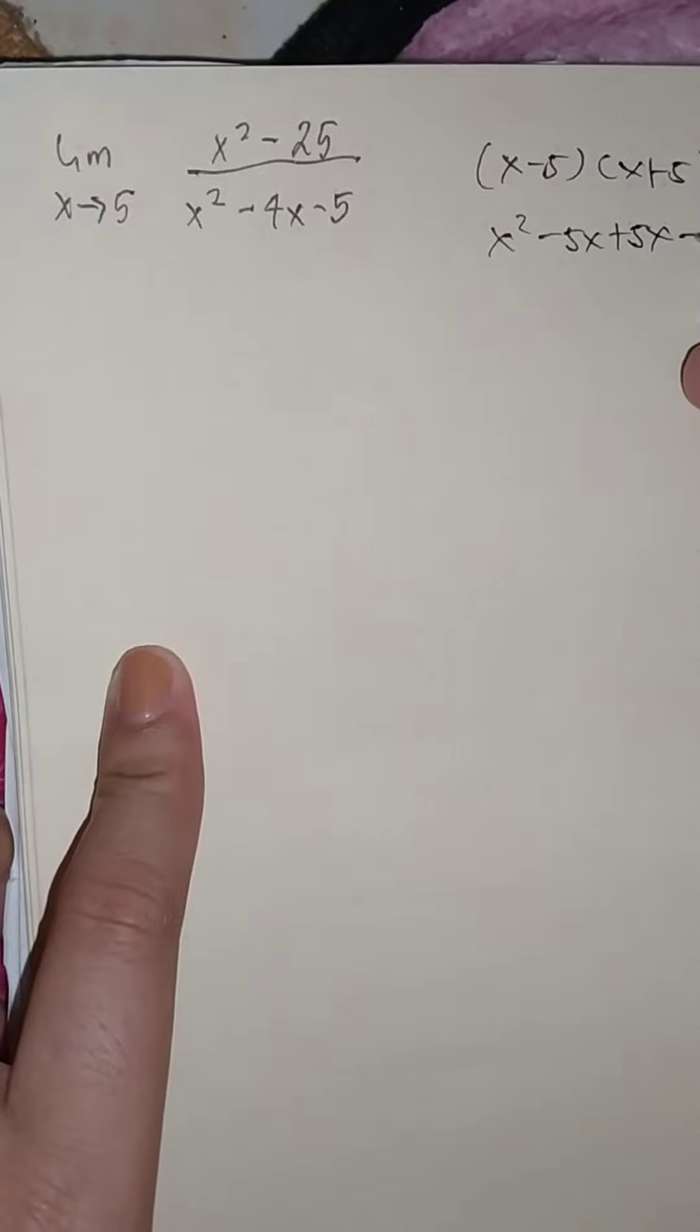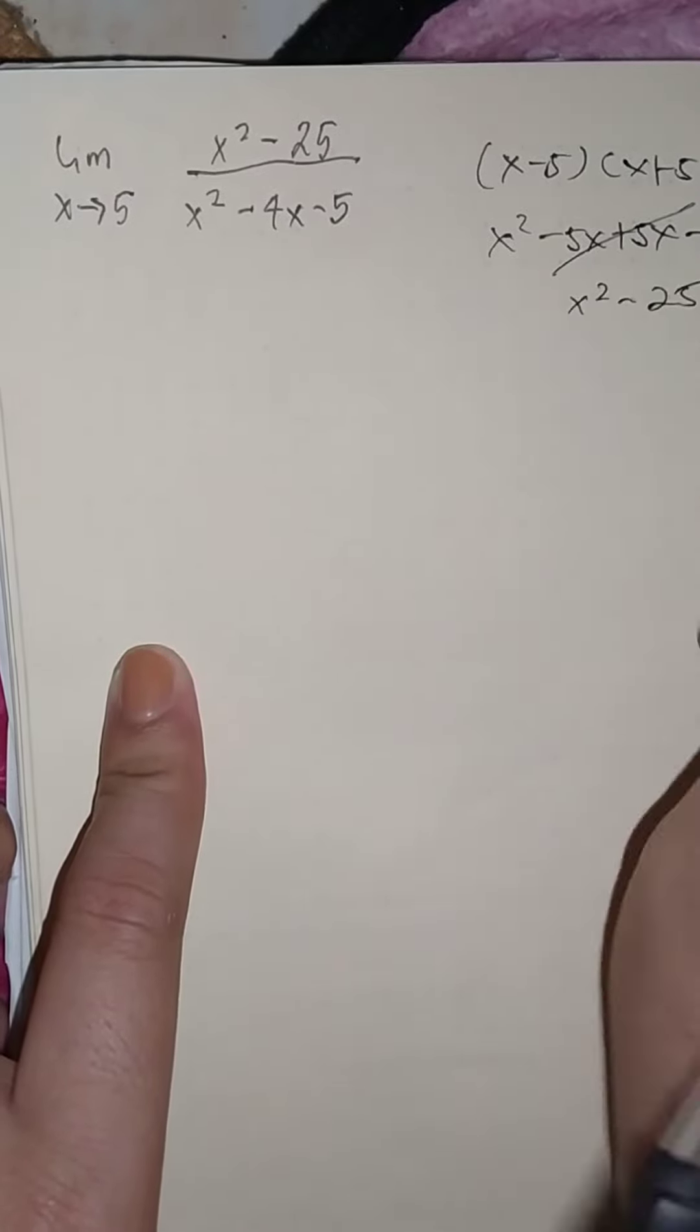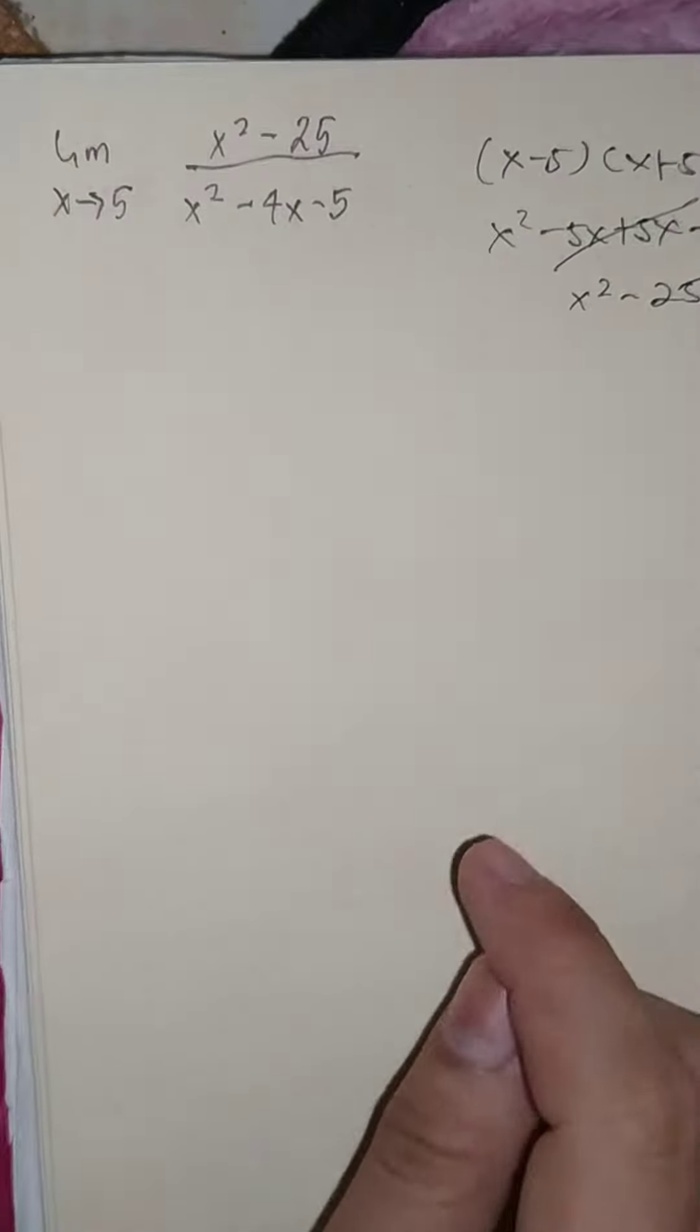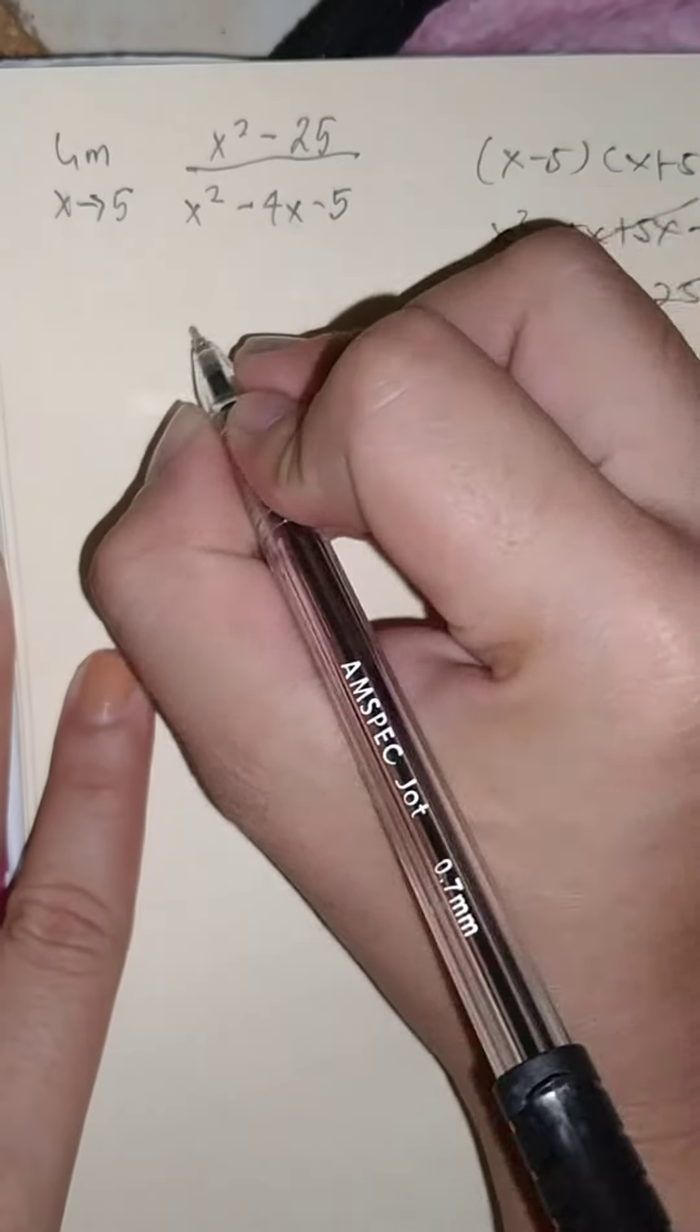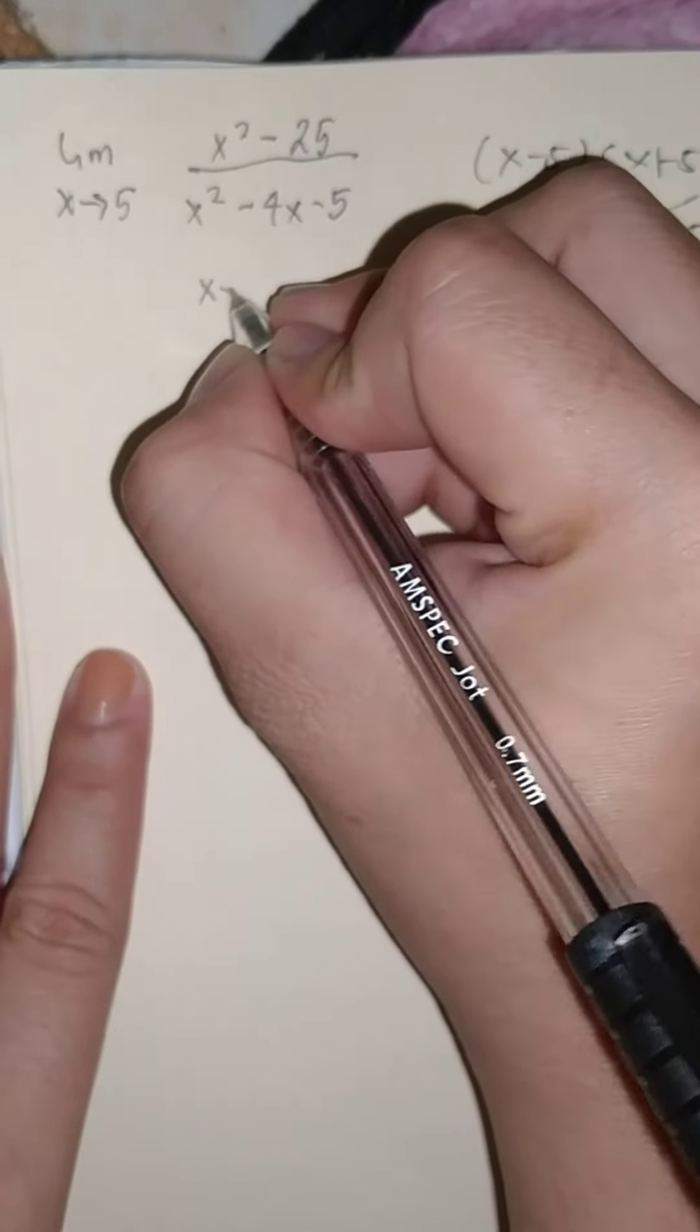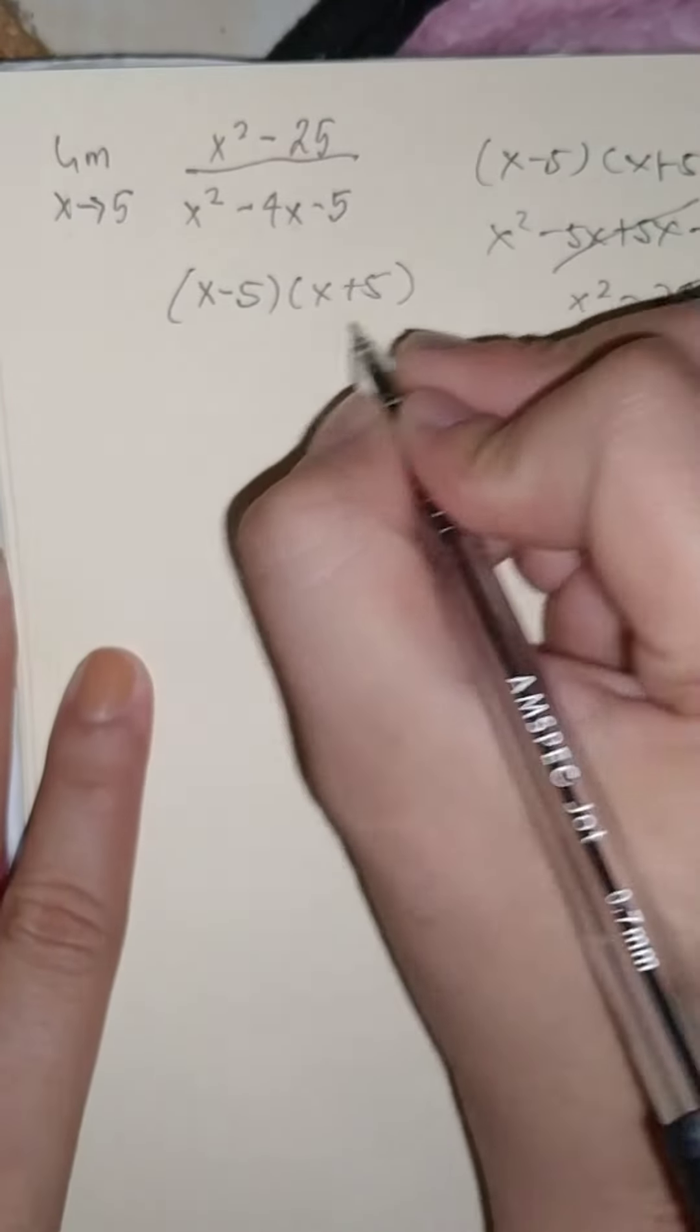Cancel this out, x squared minus 25. So we have the same value, so we can just rewrite this one as x minus 5 and x plus 5, right?